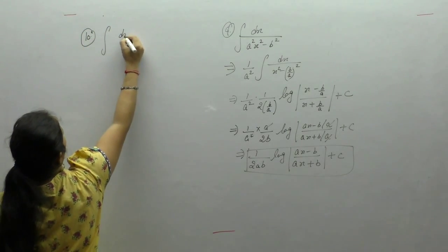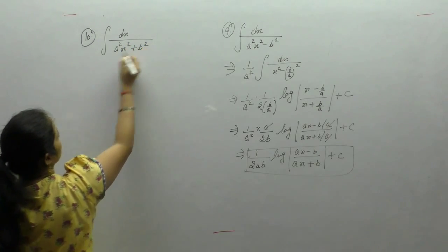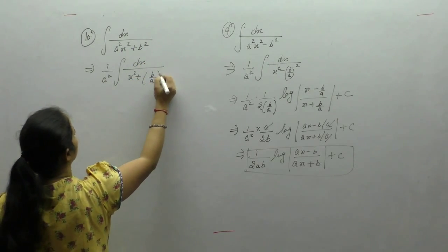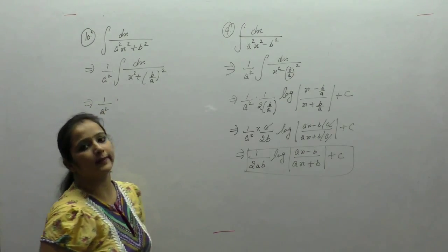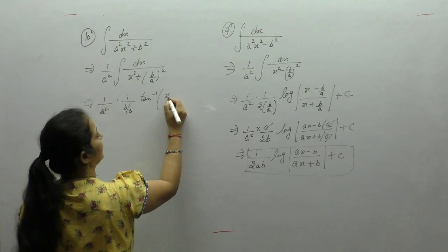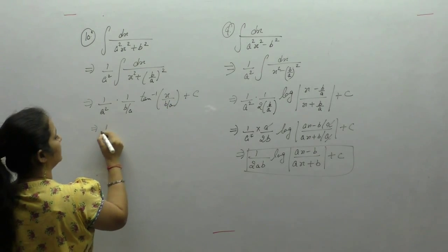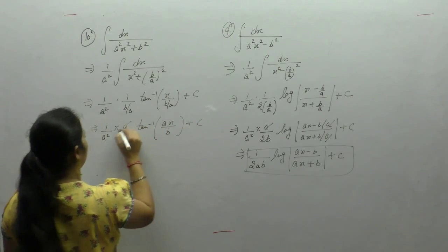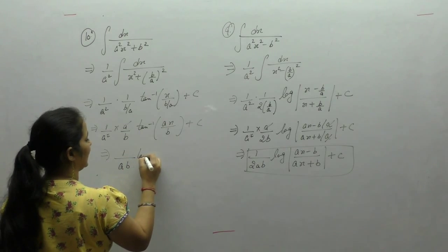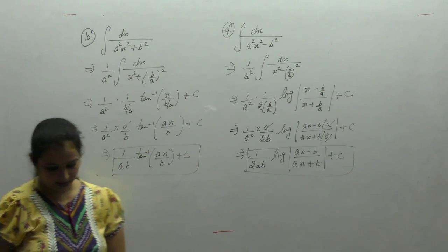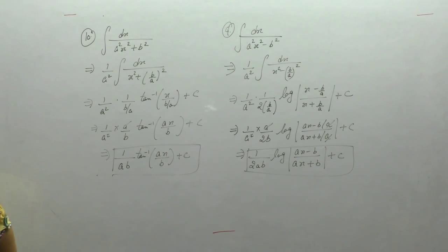Next, the integral of 1 upon (a square x square plus b square). First take a square common: dx upon (x square plus b upon a whole square). The integral of 1 upon (x square plus a square) equals 1 upon a times tan inverse (x upon a). The a will be cancelled, giving 1 upon ab times tan inverse (ax upon b) plus c.